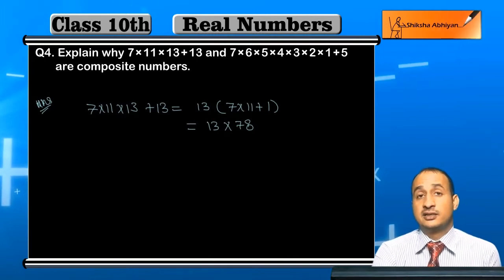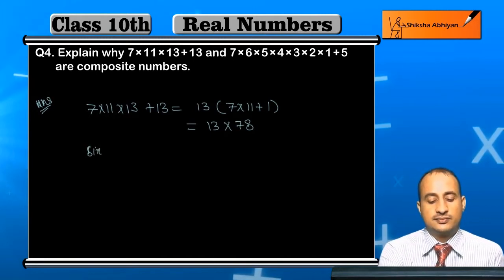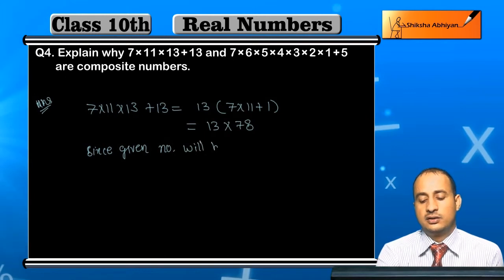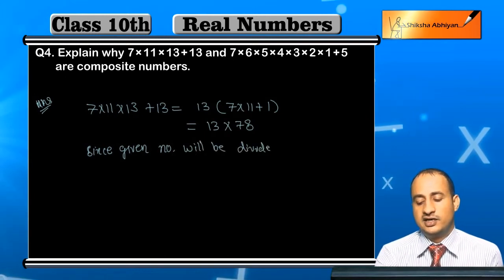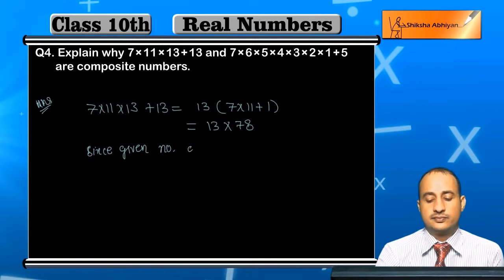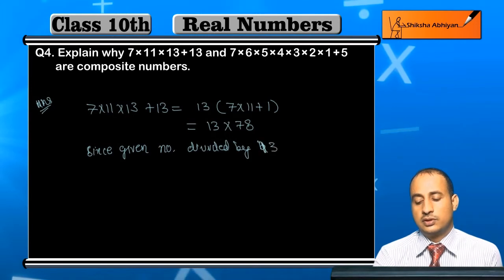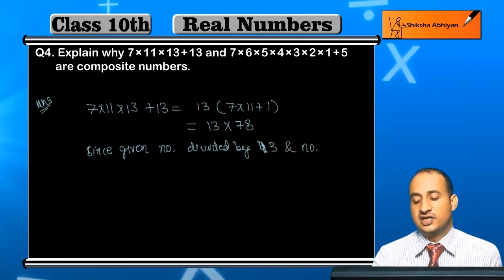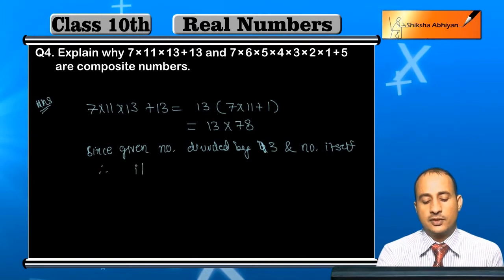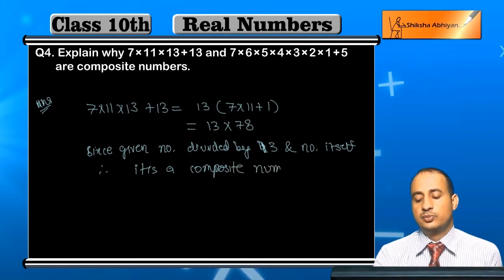If you look at this given number, it is divided by 13 and the number itself. Since the given number is divided by 13 and by the number itself, it cannot be prime. Therefore, it is a composite number.